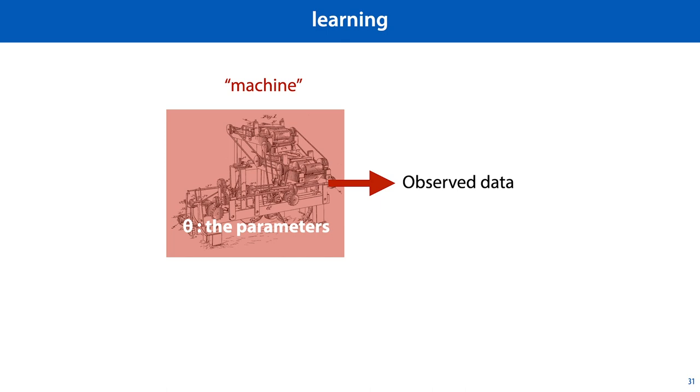has generated our data by a process that is partly deterministic and partly random. The configuration of this machine is determined by its parameters, which we'll summarize with the letter theta. Theta could be a single number, several numbers, or even a complicated data structure.